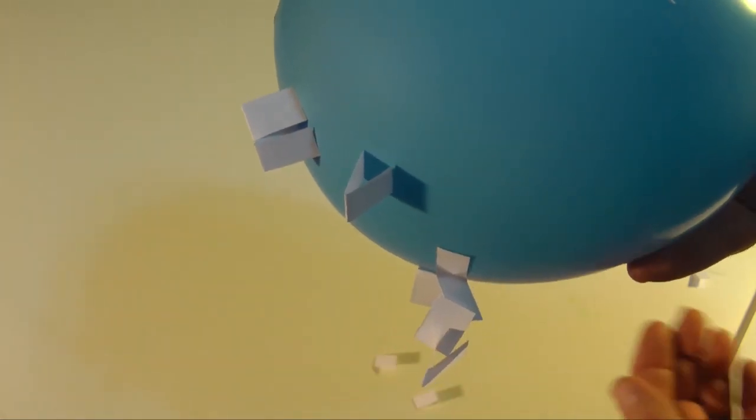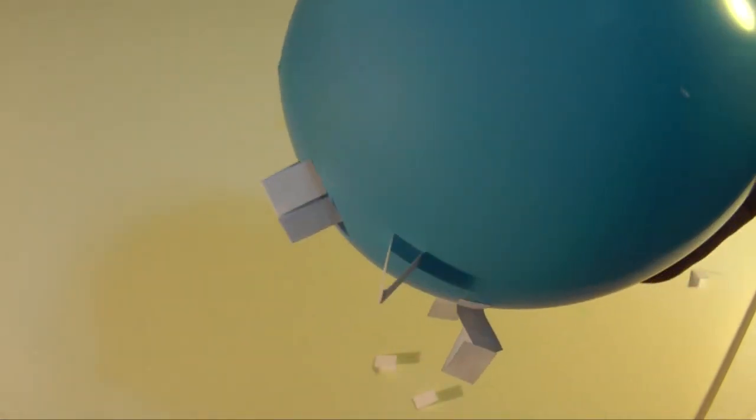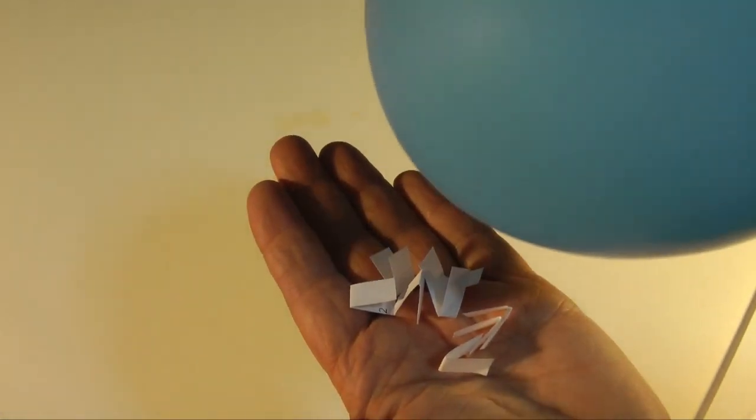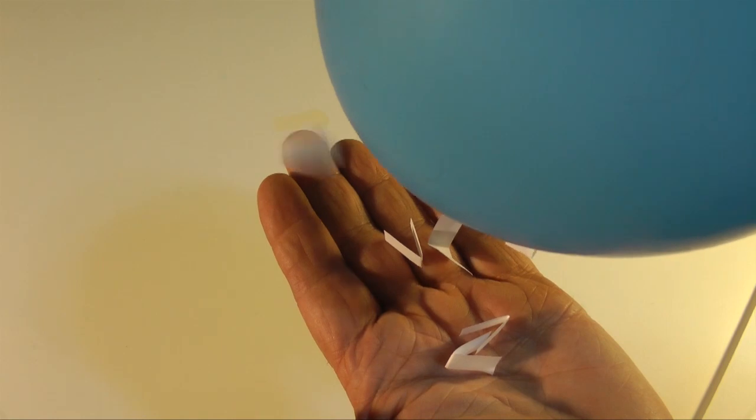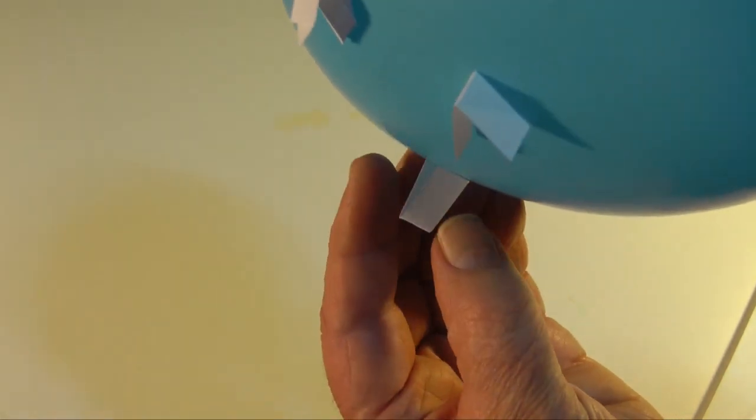During the rubbing process, the rubber balloon picks up extra electrons. It now has a net negative charge. The electrostatic force from these extra electrons attracts the protons in the paper. With such force, the paper jumps onto the balloon.